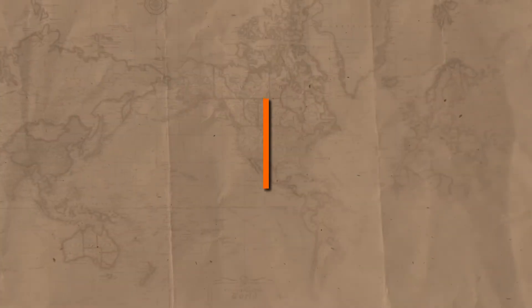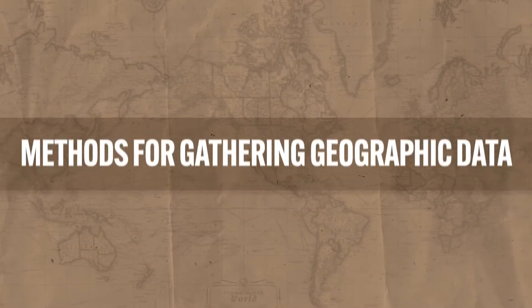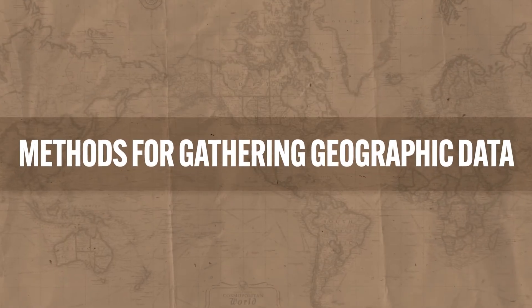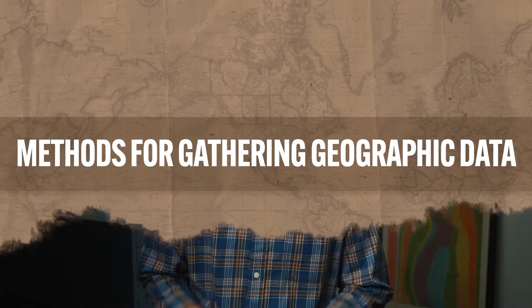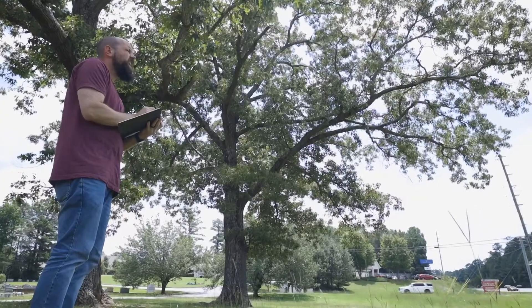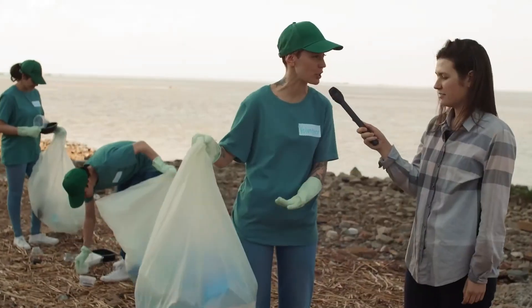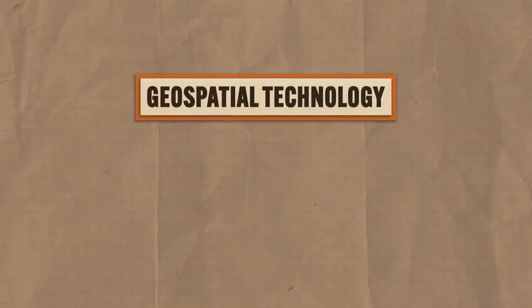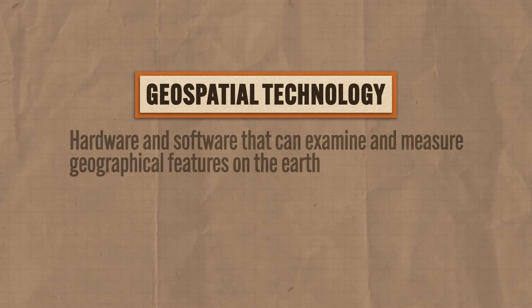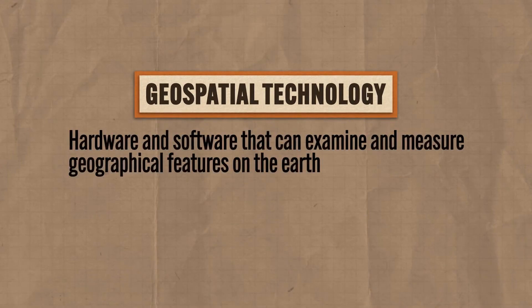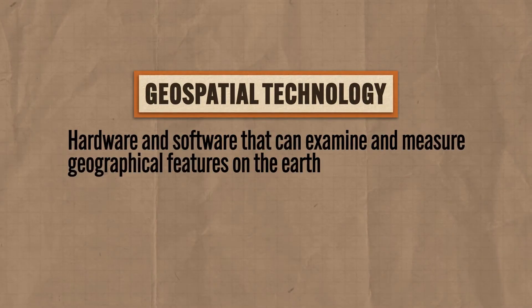Now let's turn the corner and talk about the methods used for gathering geographic data. I've already mentioned a couple methods like field observations, media reports, and travel narratives, but here we're going to consider the big boys, namely geospatial technology. This is a blanket term for all the hardware and software that can examine and measure geographical features on the Earth.